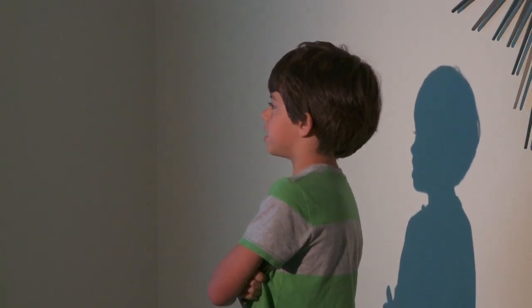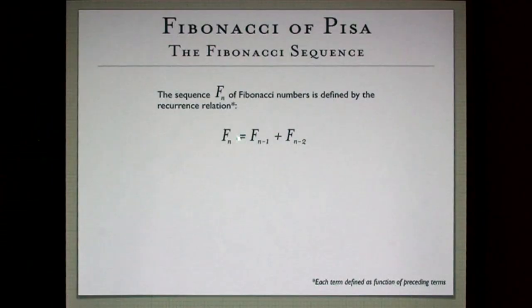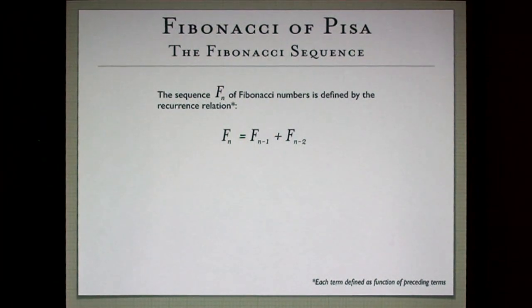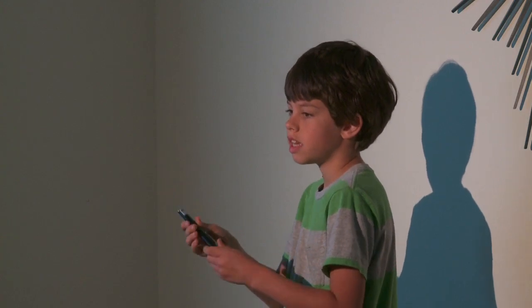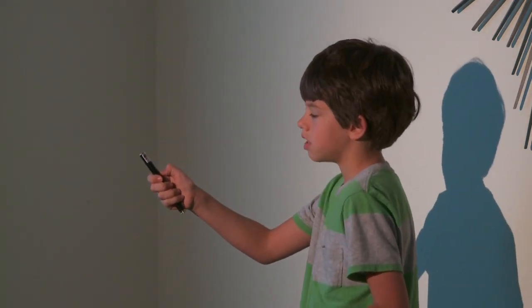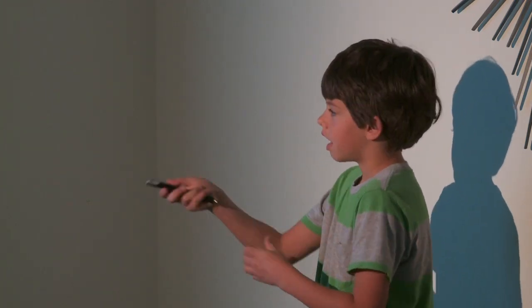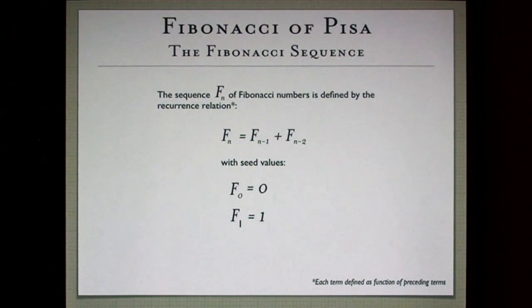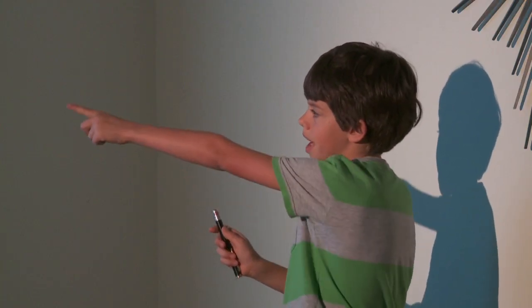The Fibonacci Sequence is abbreviated F sub n, and the formula is F sub n equals F sub n minus 1 plus F sub n minus 2. In other words, each number in the sequence is the sum of the two preceding numbers, with the seed values 0 and 1.